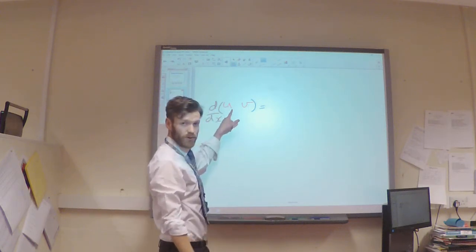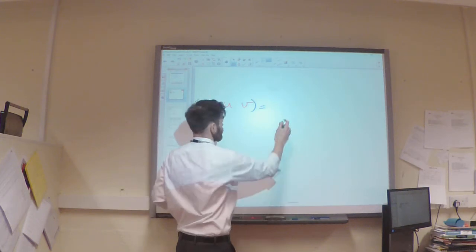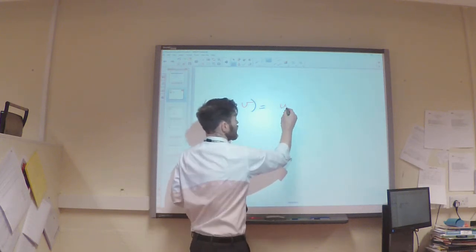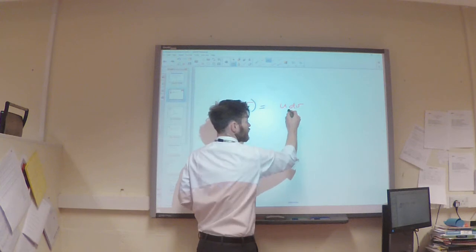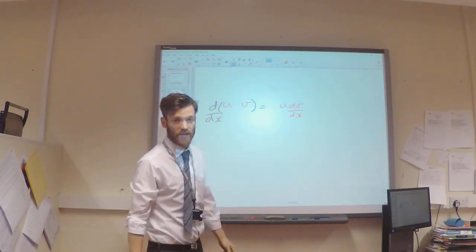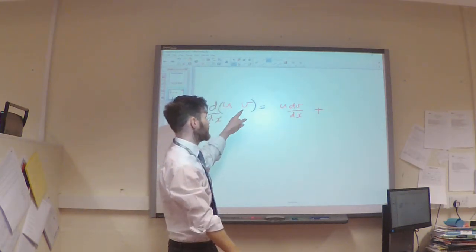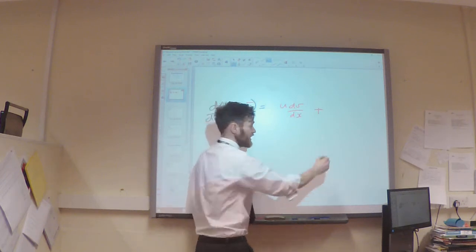So I'm going to have u times dv by dx - I'm differentiating v and multiplying it by u. And then vice versa, I'm then going to differentiate the u function and multiply that by v.